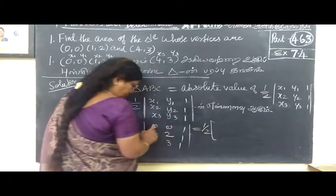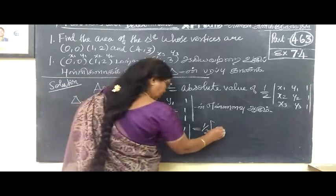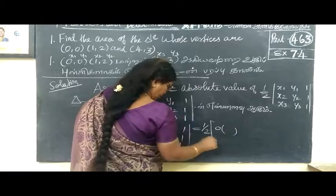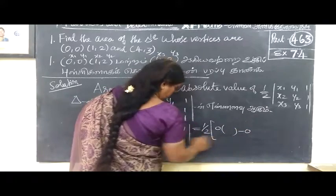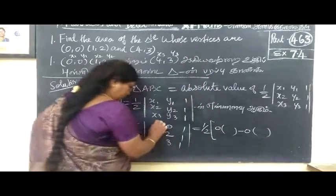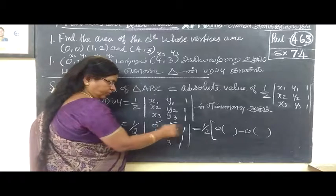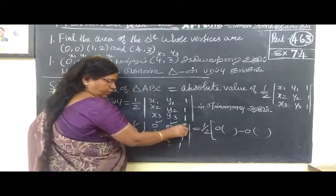Expand the bracket. What do we do? Zero into this is zero. Zero into something, this is zero. First is zero, minus is zero, minus is zero.